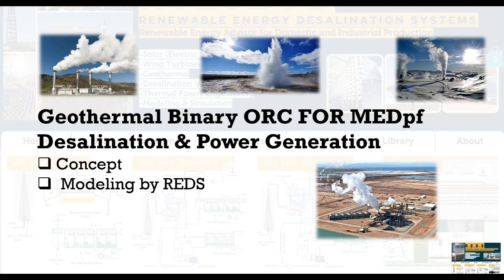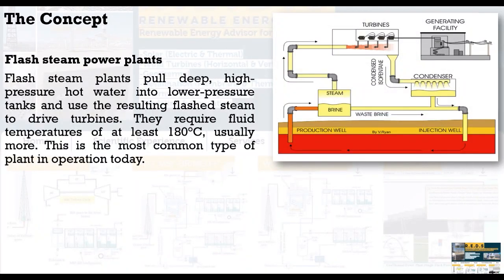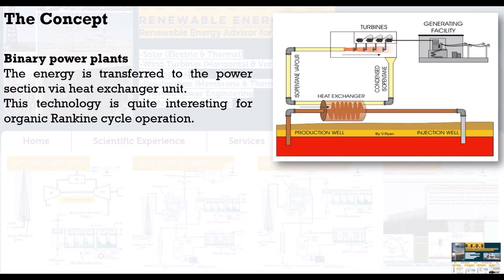Let's talk about the micro set and how we can run our model. As we already know, there are three types of configuration to harvest geothermal energy: the first is dry steam, the simplest one, and the second is flash steam power plants.